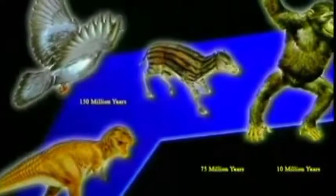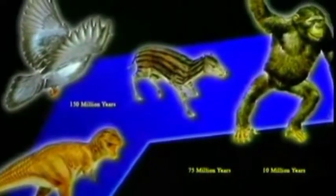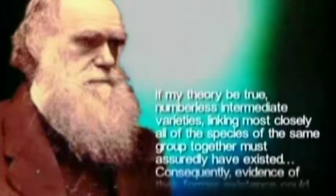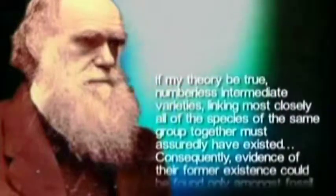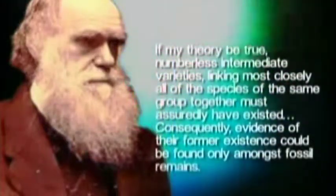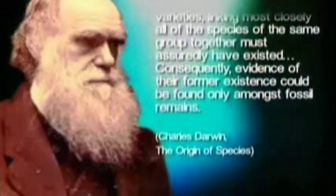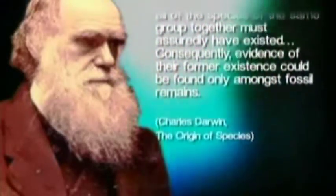In his book The Origin of Species, Darwin wrote: "If my theory be true, numberless intermediate varieties, linking most closely all of the species of the same group together, must assuredly have existed. Consequently, evidence of their former existence could be found only amongst fossil remains."